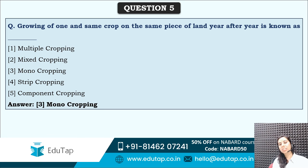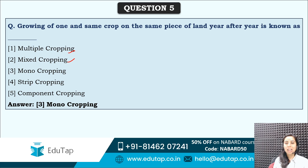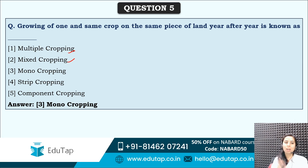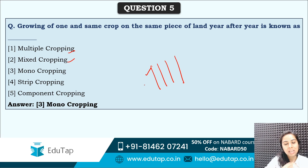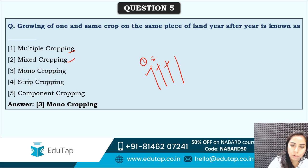Mono cropping is the type of cropping in which the same crop is grown year after year. Multiple cropping and mixed cropping are two different types. Multiple cropping means in one given year, in one cropping season, various crops are grown at a time. In mixed cropping, different crops are not restricted to one particular area — they are mixed up and grown. Strip cropping includes when a land is divided into strips, where different strips include different crops in a pattern like 1, 2, 3 repeating.